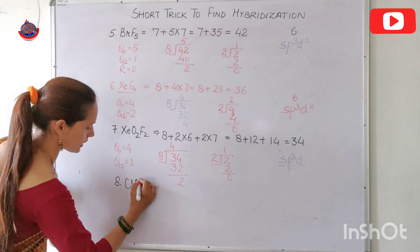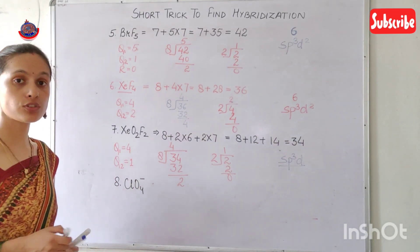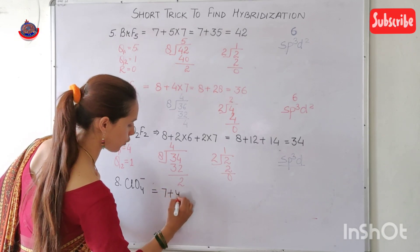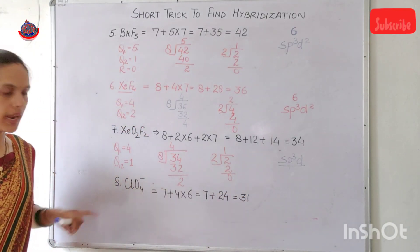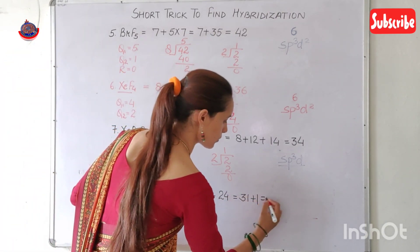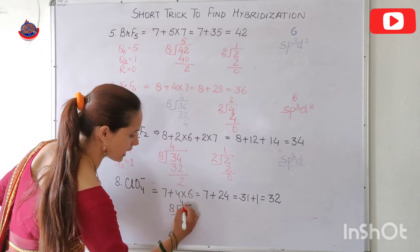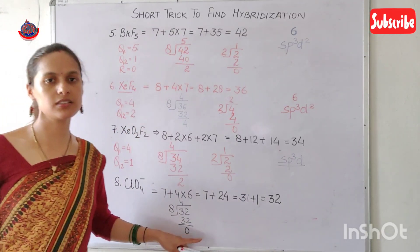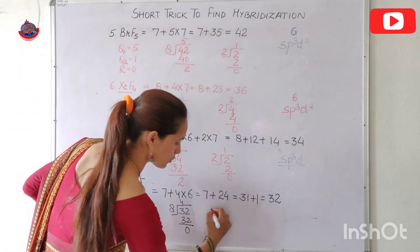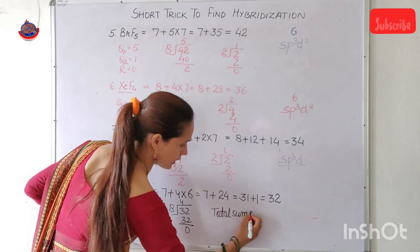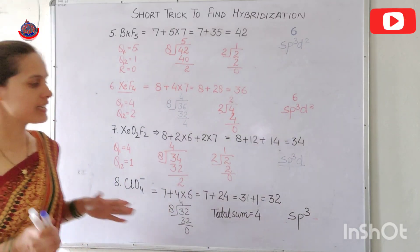Eighth example: ClO₄⁻. Chlorine belongs to the halogen family: 7 valence electrons. Total = 7 + 4×6 = 7 + 24 = 31. It is an anion, so add 1: 31 + 1 = 32. Divide 32 by 8: quotient = 4, remainder = 0. No remainder to divide. Total sum = 4. Hybridization is sp³.